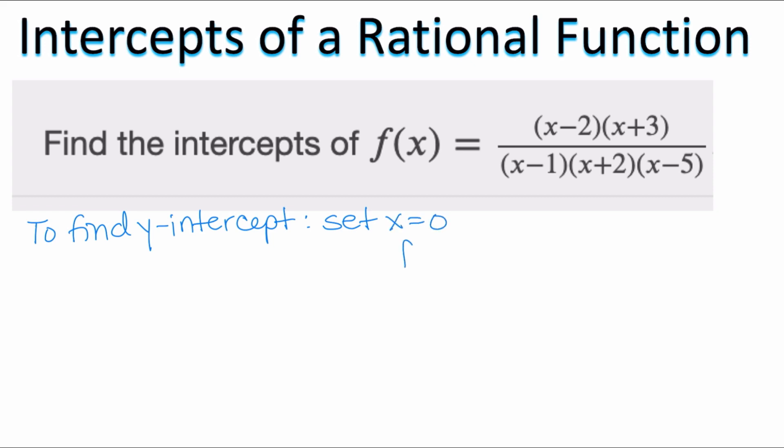I'm going to substitute 0 wherever I see an x. So 0 minus 2 times 0 plus 3 over 0 minus 1, 0 plus 2, 0 minus 5.